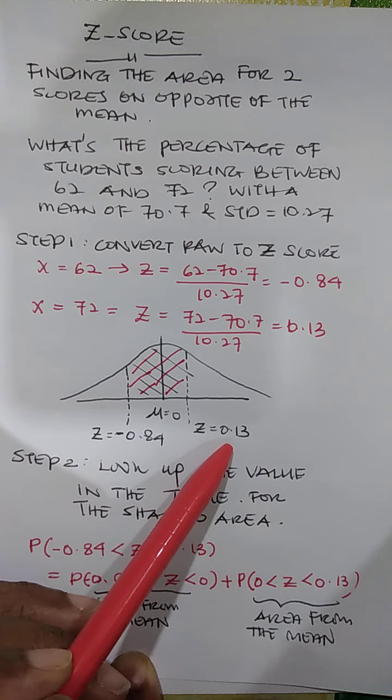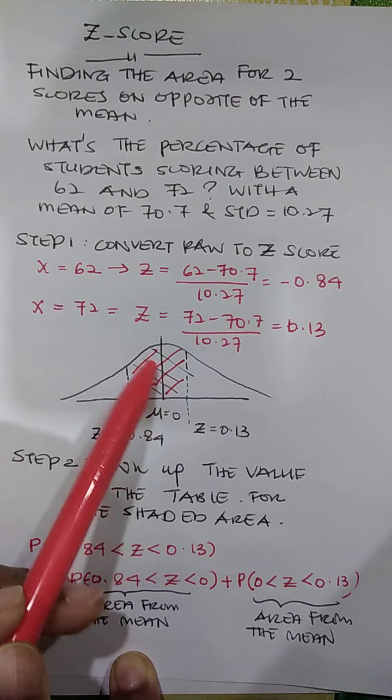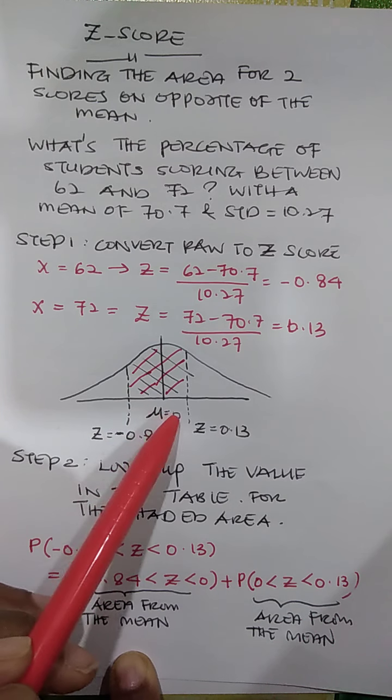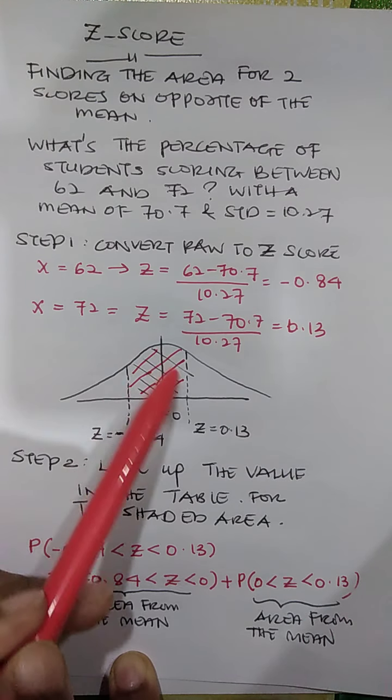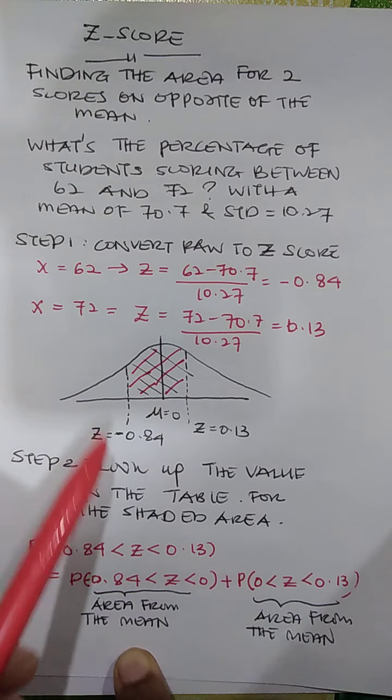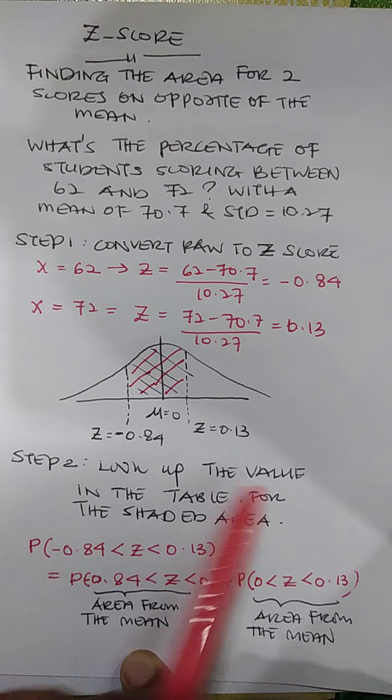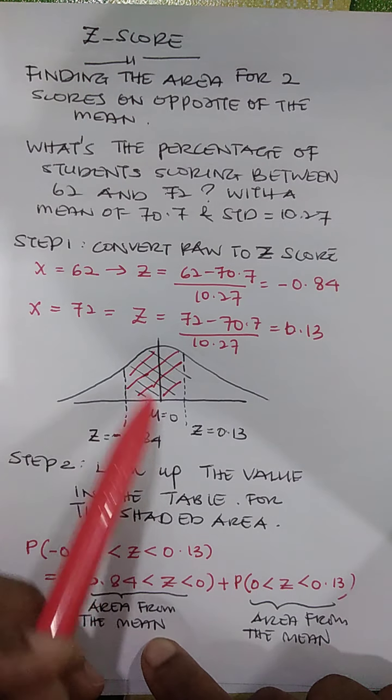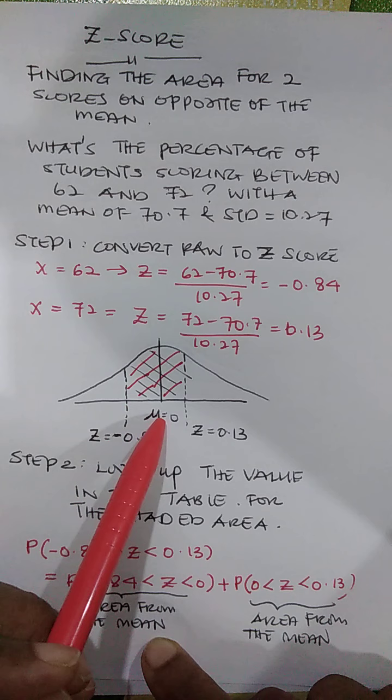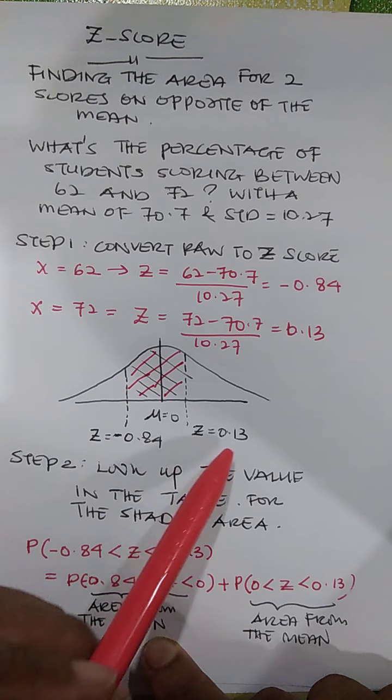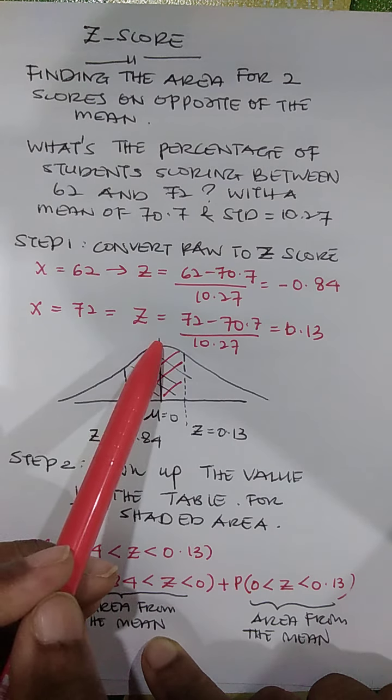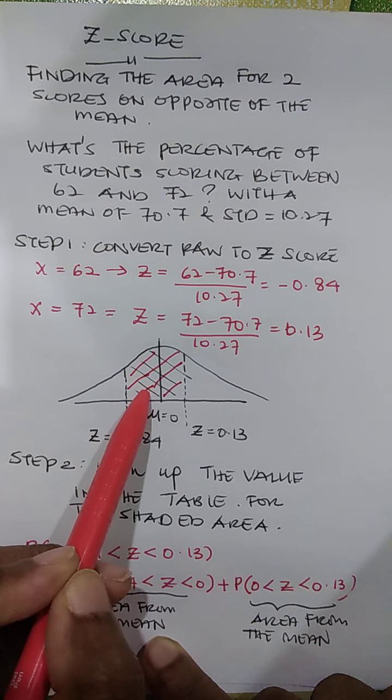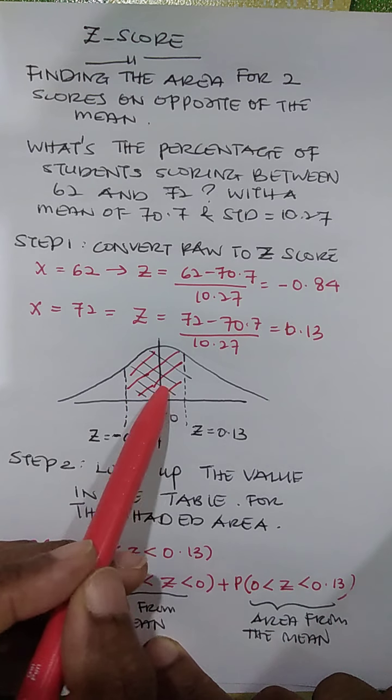So the area that I need to find out, this is the range. I want to identify the range, the percentage between these two. So I need to identify this shaded area. So how do I find out? Look in the table. That's step two. So in the table, how do I look for it? I don't have a table that I can find from negative 0.84 to 0.13. So I need to find section by section.